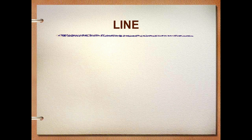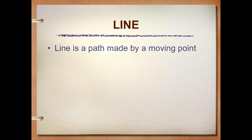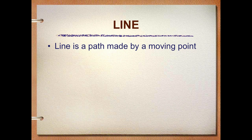The first one is line. Line can be defined by a path that is made by a moving point. Those who take geometry are probably going to say line is the shortest distance between two points, but in art we can make our line as long and as curvy as we want.